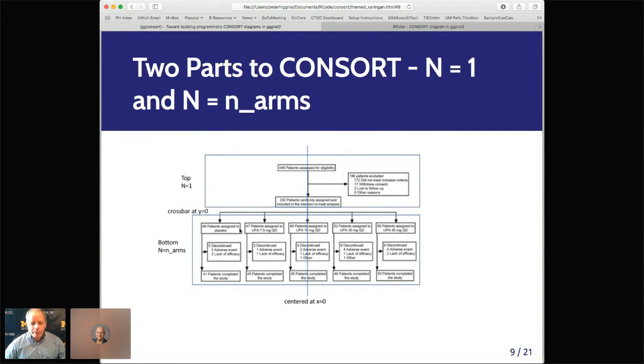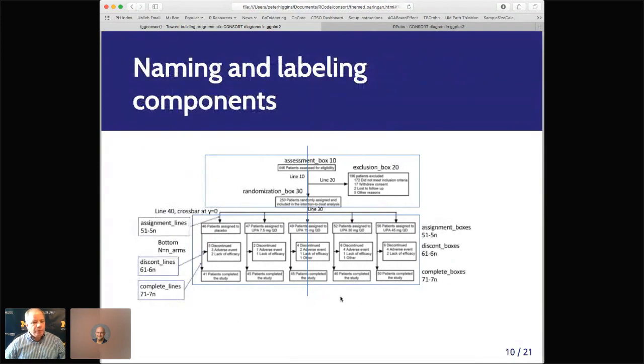So you have assignment boxes, five for a five-arm study, discontinued boxes, completion boxes, and the appropriate arrows, all number equal to n arms. I also said this crossbar here is at y equals zero, and it's centered at x equals zero to make the locations a little bit easier. Then I went through and named and numbered everything so I could organize it, but clearly there's two distinct things going on, things where you draw one of something, or things where you draw n arms of something.